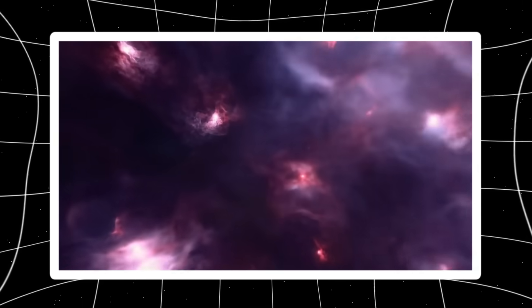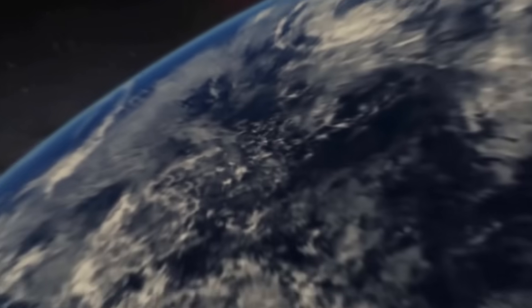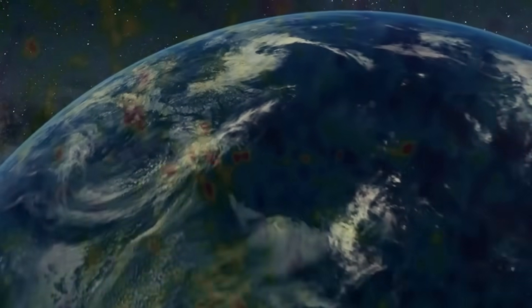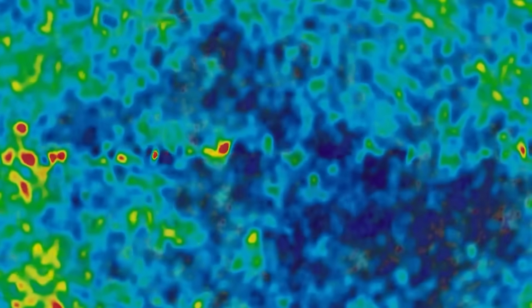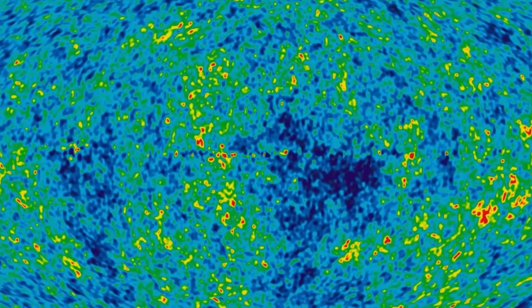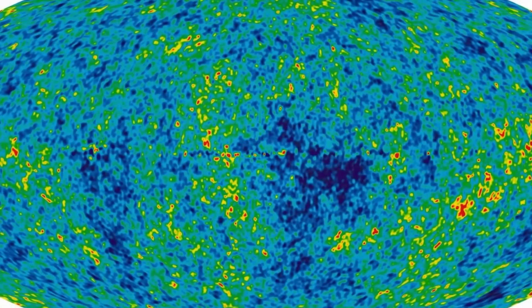If this anomaly holds up, it could mean the universe isn't expanding uniformly, or that something is actively manipulating light as it travels to us. Is this a flaw in our understanding of physics, or is something about space-time itself changing between the source and our eyes?